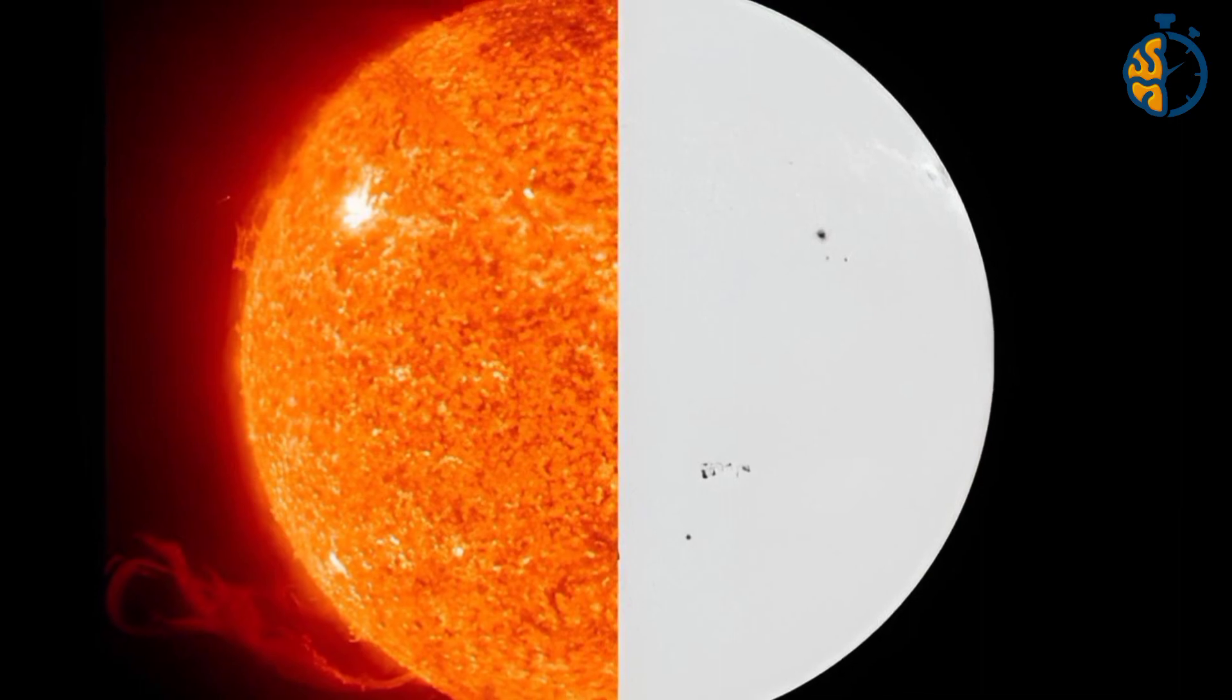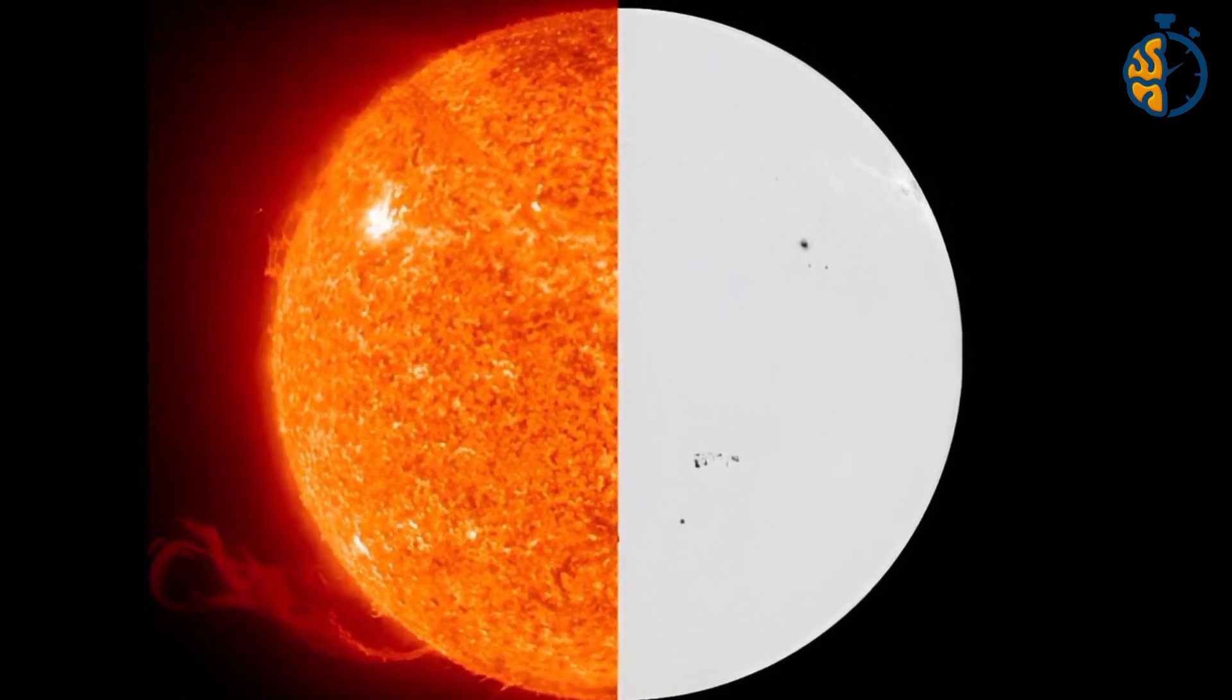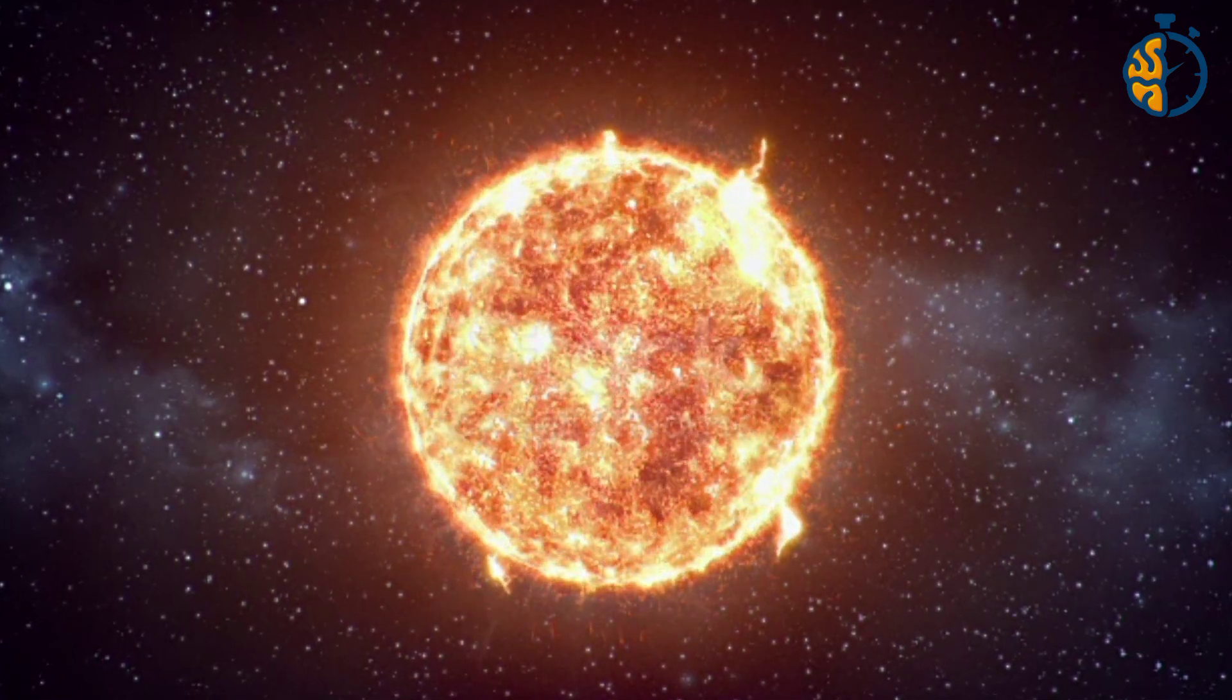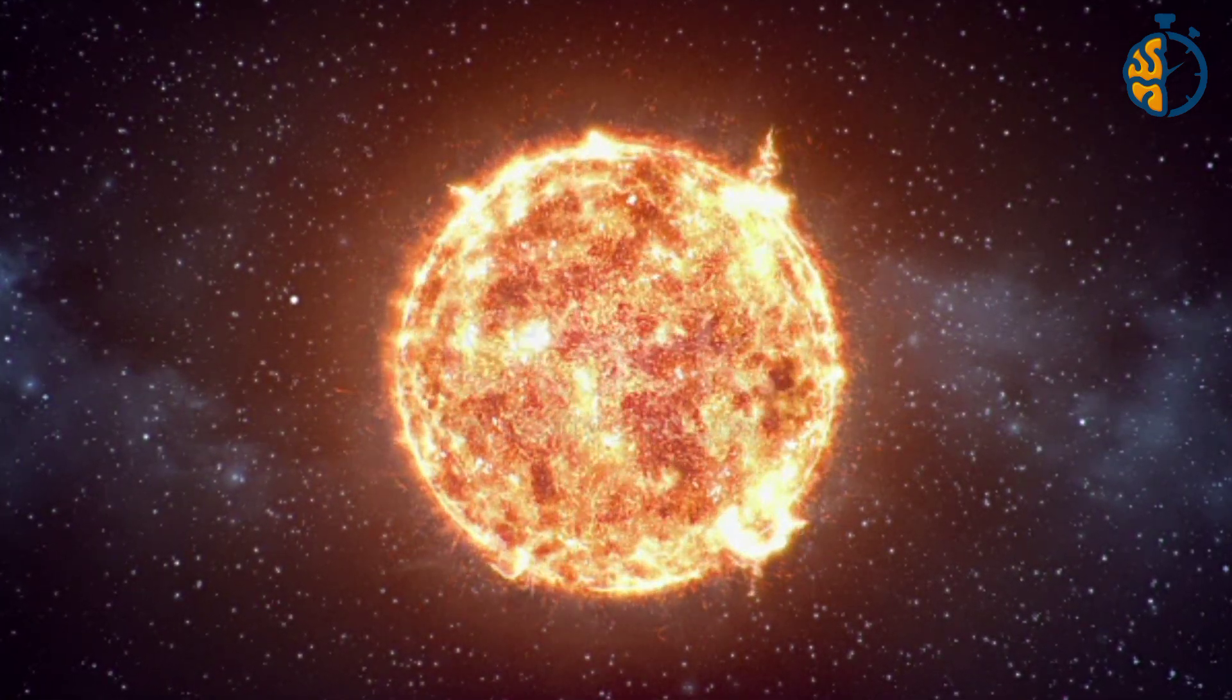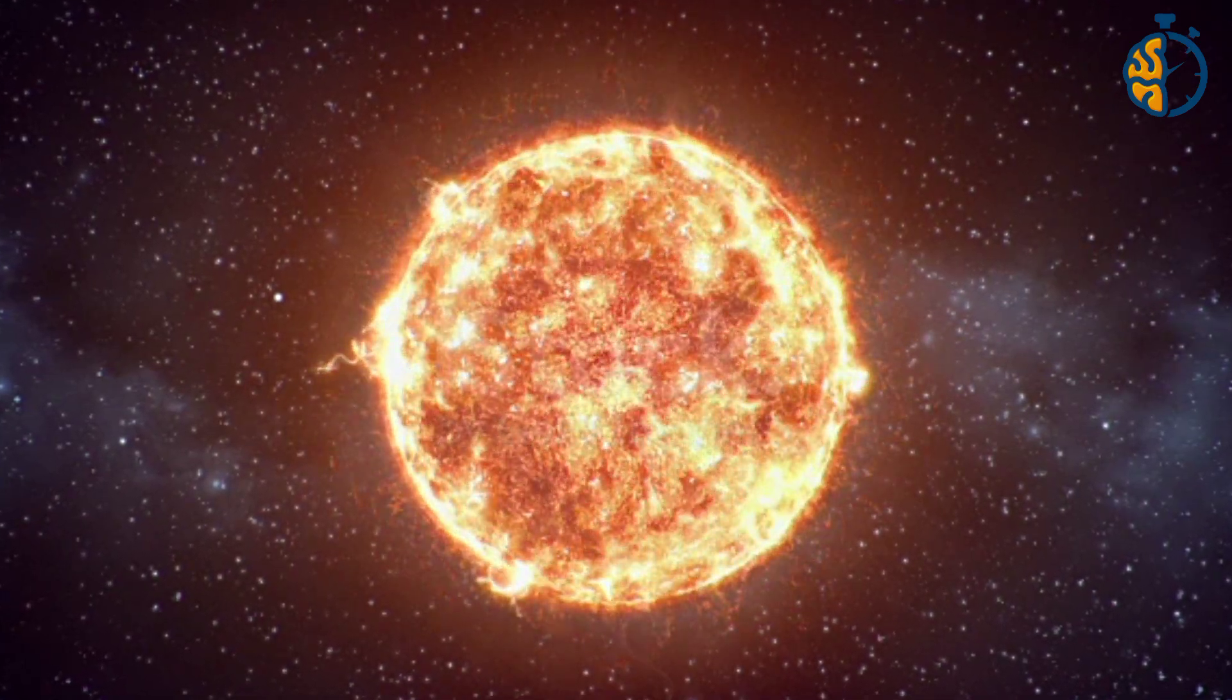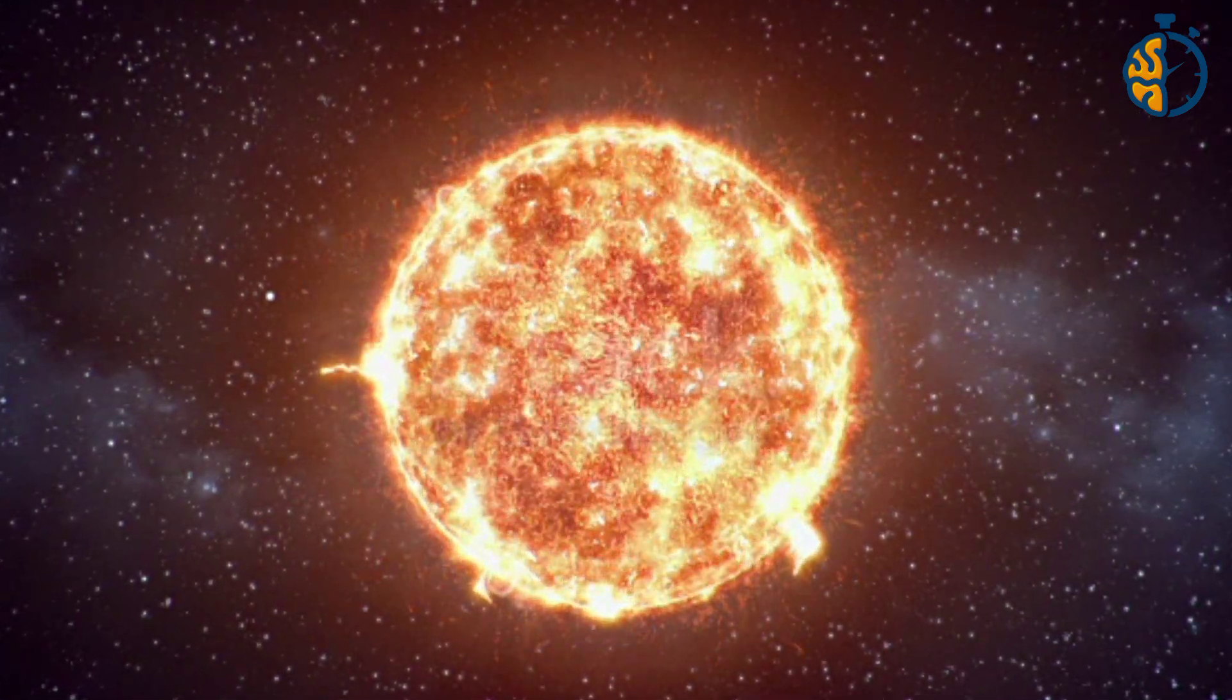In fact, the sun is not yellow, but its true color is white. The secret of the sun appearing to us in yellow is due to the atmosphere, which reflects the seven colors of the spectrum: red, orange, yellow, green, blue, indigo and violet. When we mix these colors together, we get white.